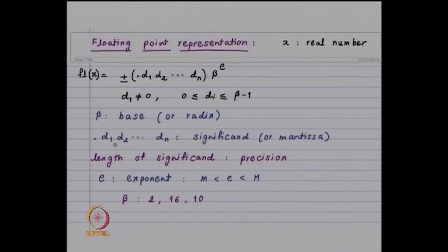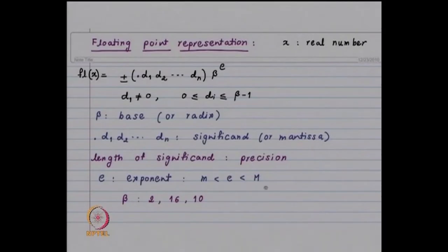In any case, d1, d2, ..., dn are finite in number and are known as the significand or mantissa, while e is the exponent. The exponent lies between some minimum m and maximum M, and the values of m and M depend on the computer and whether you are using single or double precision. This is the floating point representation.